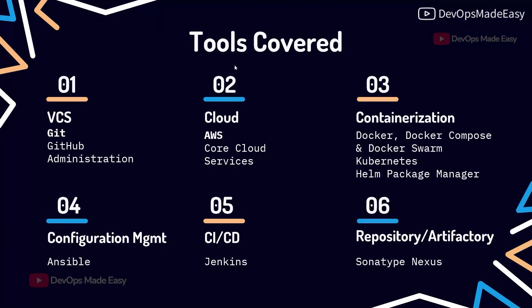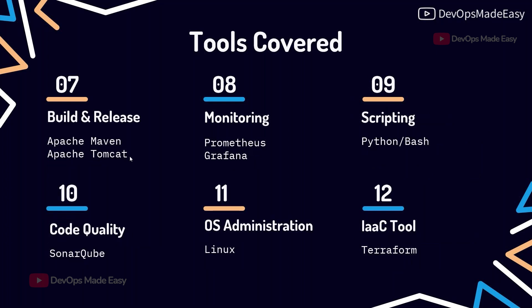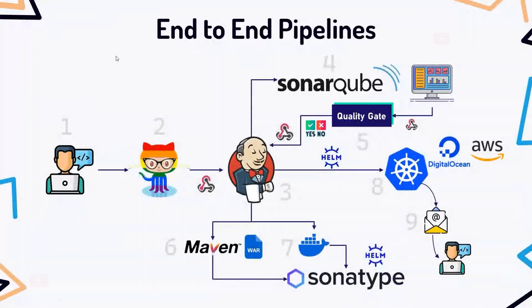We cover Docker, Docker Compose, and Docker Swarm, Kubernetes and Helm package manager. In configuration management we teach Ansible. For CI/CD we have complete Jenkins from basics to advanced level. For artifact management we teach Sonatype Nexus. For build and release we cover Apache Maven and Tomcat. For monitoring we have Prometheus and Grafana. For scripting we teach shell scripting, and for code scanning we use SonarQube. We also cover complete Linux administration and Terraform for infrastructure as code.